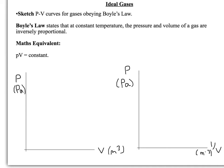Boyle's Law states that at a constant temperature, pressure and volume of a gas are inversely proportional, or the pressure multiplied by volume is a constant. You can see this graph in two different forms.